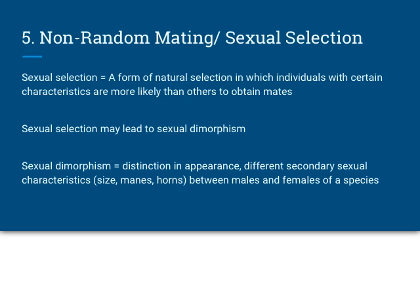The last thing that can disrupt the Hardy-Weinberg equilibrium is non-random mating or sexual selection. Sexual selection is a form of natural selection in which individuals with certain characteristics are more likely than others to obtain mates. While natural selection means certain traits help you survive longer and have more offspring, sexual selection means certain traits make it easier to get a mate — and if it's easier to get a mate, you have more offspring. This leads to sexual dimorphism, meaning male and female organisms look different, because each sex selects for different traits in the opposite gender.